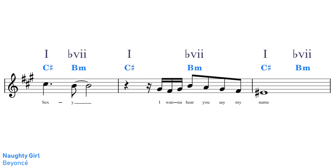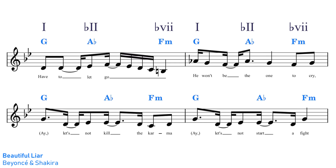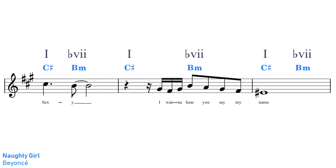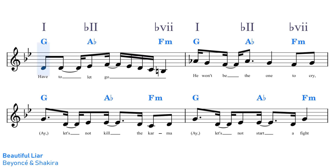Both the songs Naughty Girl and Beautiful Liar by Beyoncé are using the Phrygian Dominant scale. As we can see from these Beyoncé songs, the Phrygian Dominant scale can yield some really interesting chord progressions. It's one of the only scales where we would have a major tonic chord with a major flat 2 chord and a minor flat 7 chord.